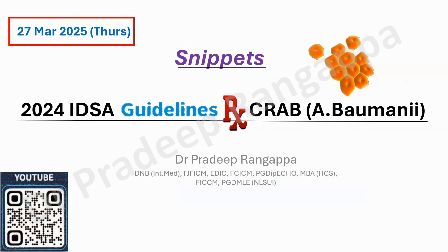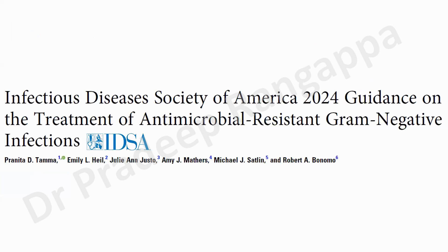The key IDSA recommendations are with regards to treatment of Acinetobacter baumannii, because most of the ICUs in India are dealing with this bug which is particularly resistant to carbapenem — what we call CRAB, carbapenem-resistant Acinetobacter. The options are very few in India, so we need clarity on what we should be using as per IDSA. These guidelines came in 2024.